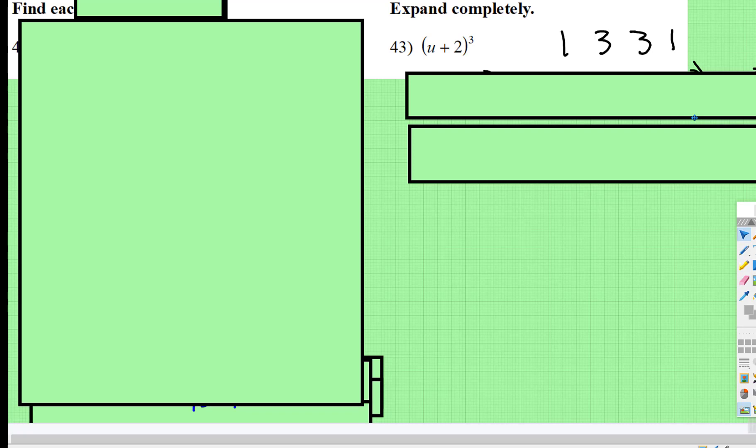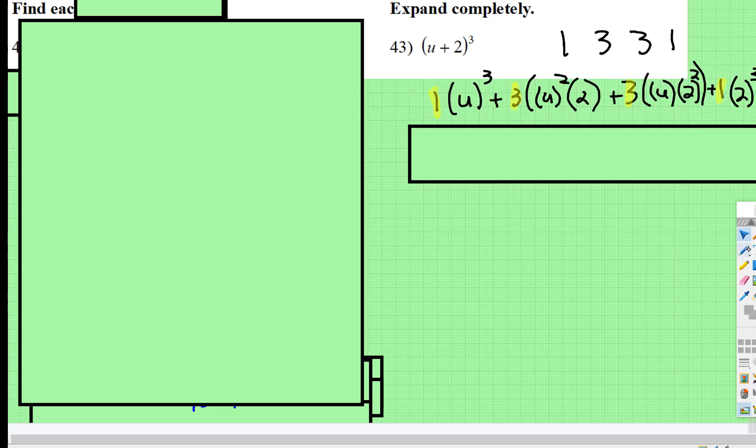So we're going to bring down the 1, 3, 3, 1, which is what I did right here. And then in parentheses, the u goes in descending. So u cubed, u squared, u to the first, u to the zero, so we don't have to write it.